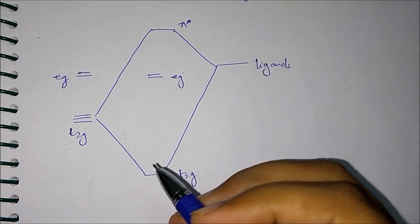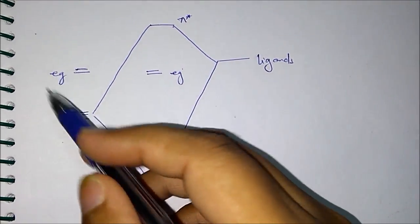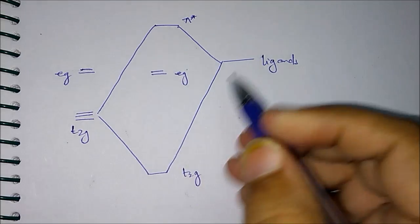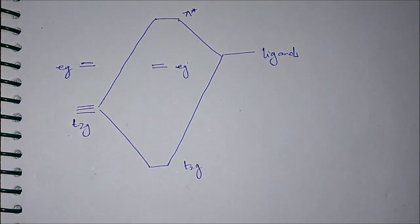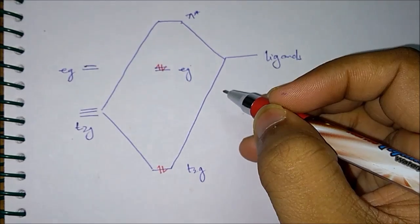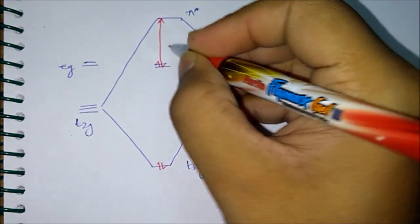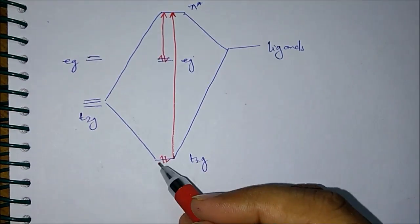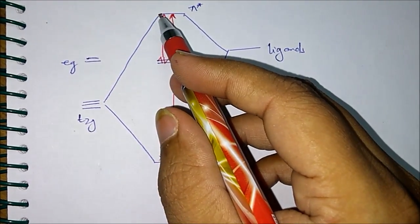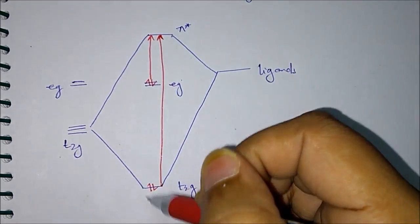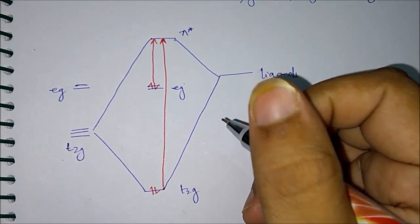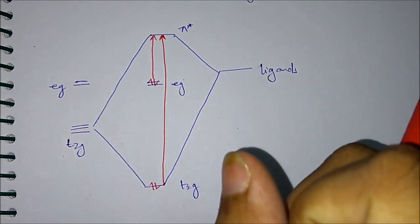Here is the molecular orbital diagram for MLCT. The T2G and EG orbitals of the metal are shown, along with the ligand. The T2G orbital of the metal overlaps with the ligand. If we have electrons filled in both T2G and EG, the transition will take place from these metal orbitals to the pi star - the pi anti-bonding orbital of the ligand. The transition is taking place from the metal orbital to the ligand pi star orbital.